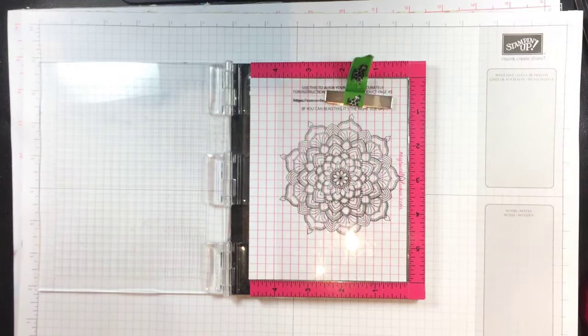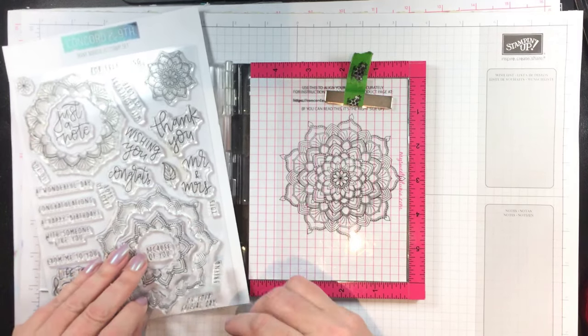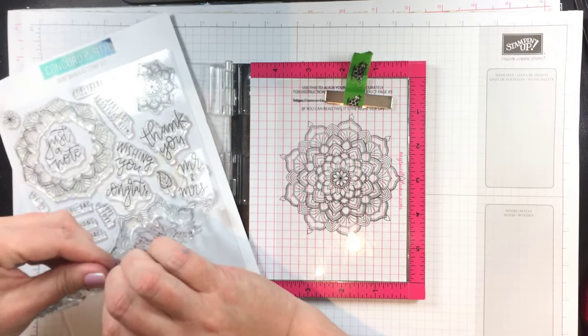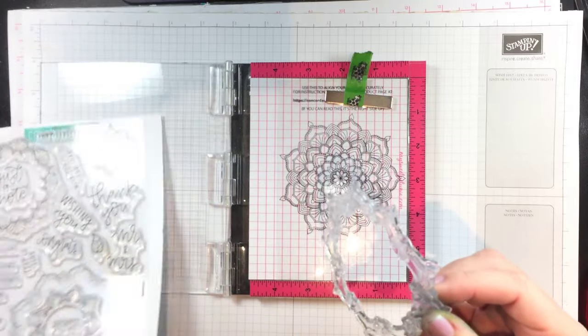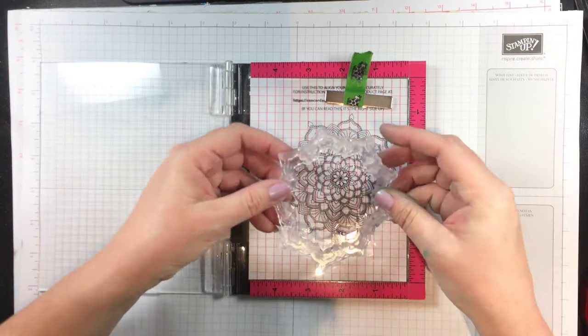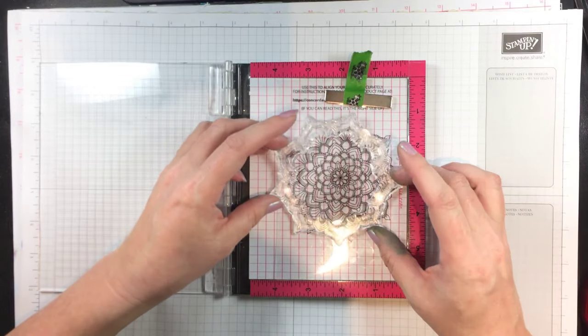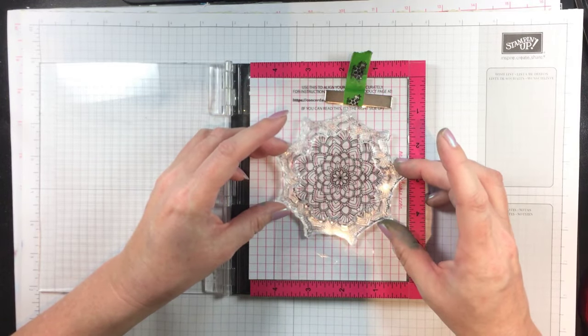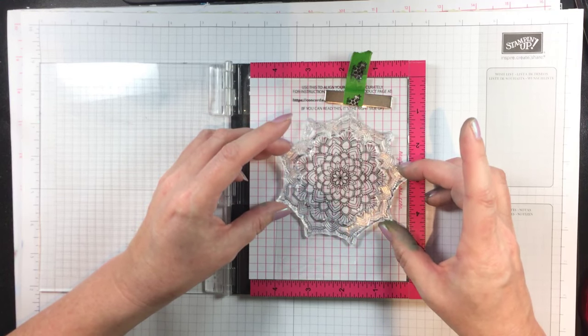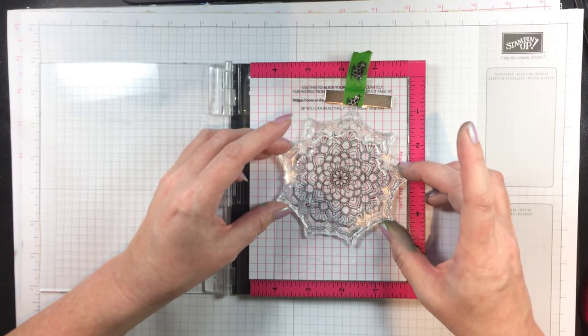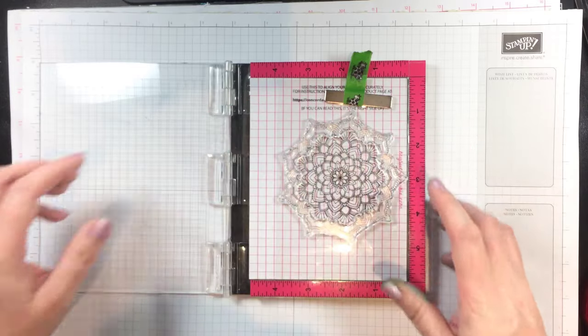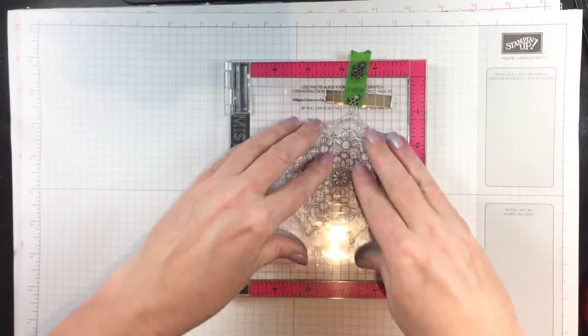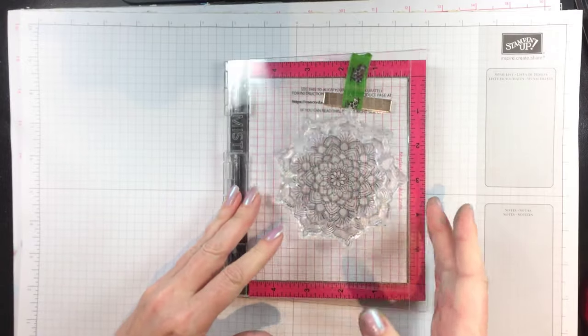And the reason they included this guide is photopolymer stamps stretch. So when you have a big open nearly circular-ish stamp like this, it can stretch a little bit. This guide helps you keep it in the shape it was designed in. So that way, if it's pulled a little bit to one way or another, you can fix that before you stamp it by aligning it with the guide. Then you just pick it up with the lid of your MISTI, remove the guide, and now you're ready to stamp.